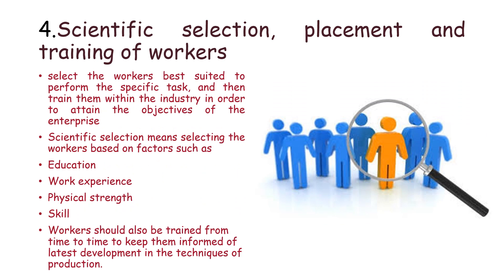The next important principle is scientific selection, placement and training of workers. Select the workers best suited to perform the specific task and then train them within the industry to attain the objectives of the enterprise. Scientific selection means selecting workers based on factors such as education, work experience, physical strength, and the skill required. Workers should also be trained from time to time to keep them informed of the latest developments in techniques of production.